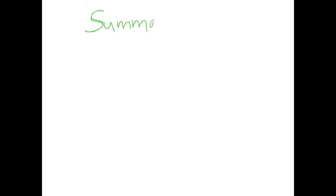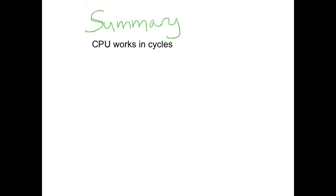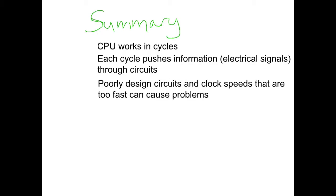Let's summarize some of the information that we've got so far. So the CPU works in cycles. Each cycle pushes information or electrical signals through the circuits that are on the circuit board. Circuits that are poorly designed and clock speeds that are too fast can cause problems.